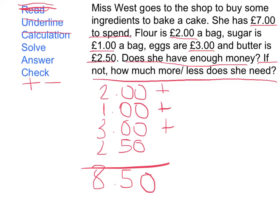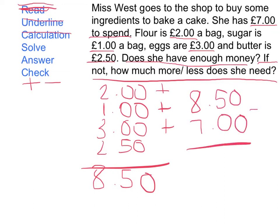Let's look back at the question: does she have enough money? We can see that she has seven pounds to spend, so that's not quite enough. Now we need to take away seven pounds from eight pound fifty, which leaves us with one pound fifty. So now we've solved it — our answer is one pound fifty, because the question asks how much more or less money she needs to buy all her ingredients. If it was eight pound fifty and she has seven pounds, she needs one pound fifty more.